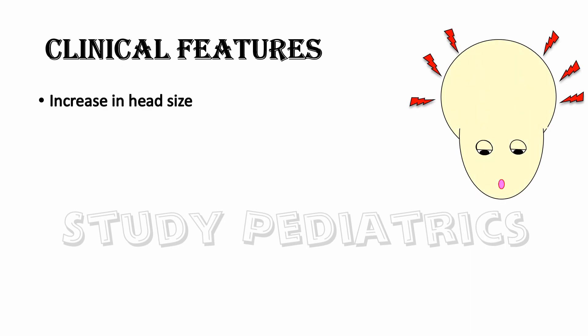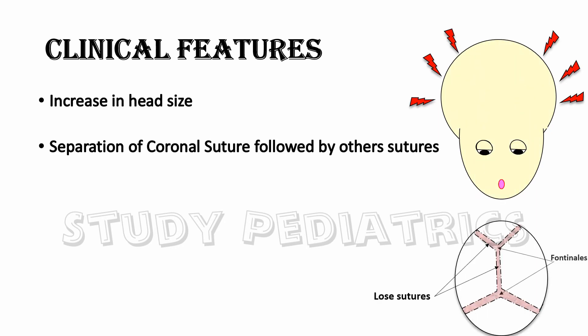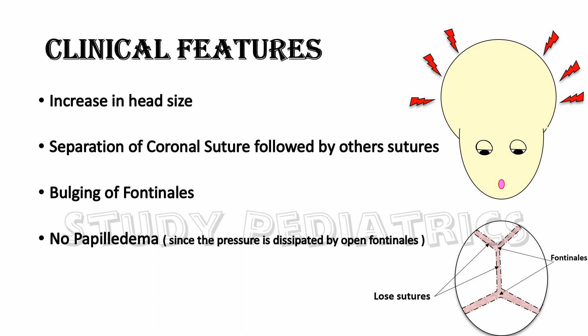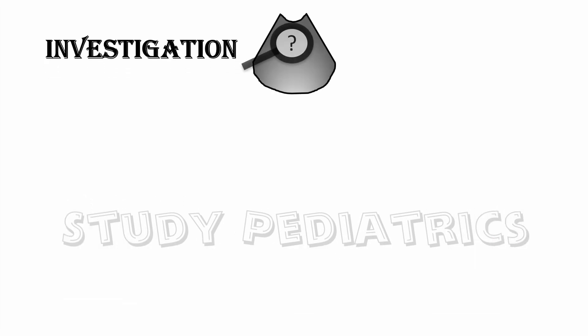The clinical features include an increase in head size, separation of coronal sutures followed by other sutures, bulging of fontanels, no papilledema — since the pressure is dissipated by the open fontanels — and the sunset sign.